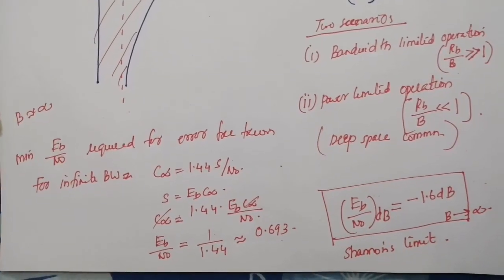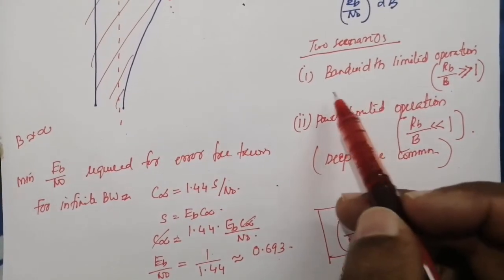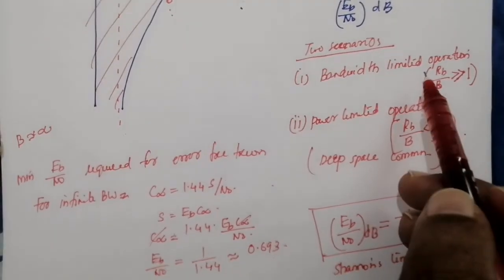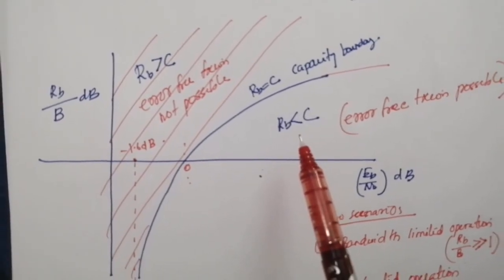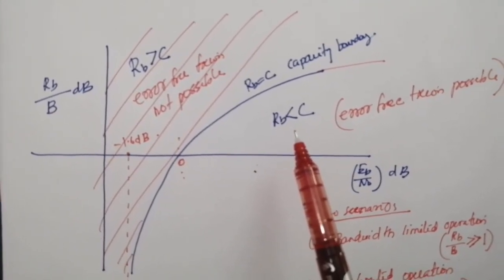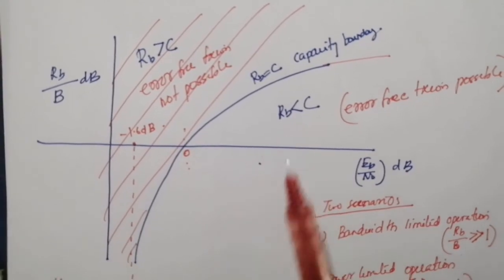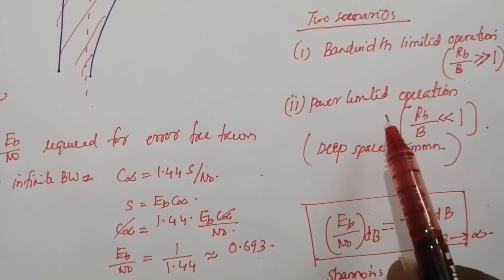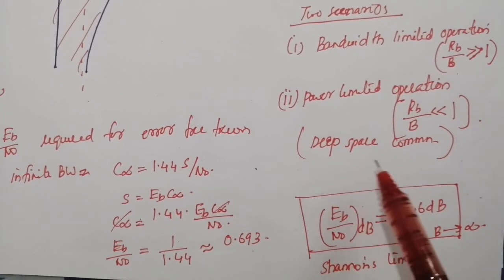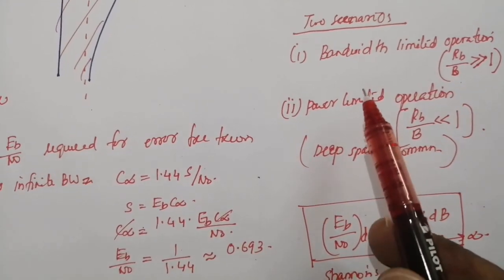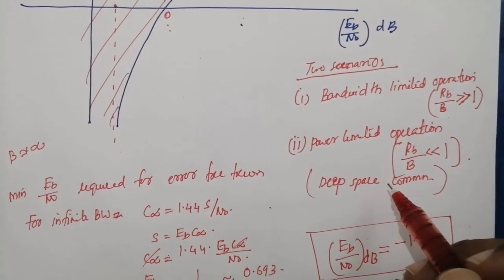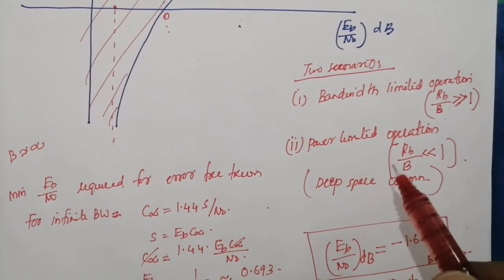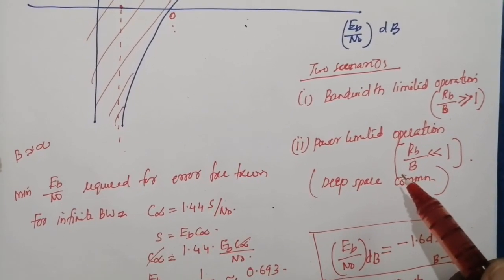Let us have a quick recap. In the case of bandwidth-limited operation, a large value of Eb/N₀ is required to keep Rb less than C — that is, a large average power is required. In the case of power-limited operation, as in deep space communication, we have a large bandwidth compared to the bit rate, so only the minimum signal power is required.